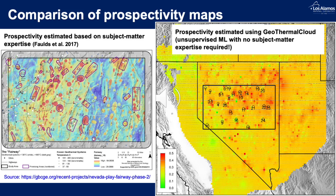Here is a comparison of prospectivity maps obtained using two very different methods. On the left is a map produced based on subject matter expertise in 2017. On the right is the map produced using our Geothermal Cloud framework with unsupervised machine learning, which practically does not require any subject matter expertise. As you can see, there is a general consistency between the areas estimated by both analyses — one is very fast with very limited subject matter expertise, and the other is very laborious and intensive to produce.